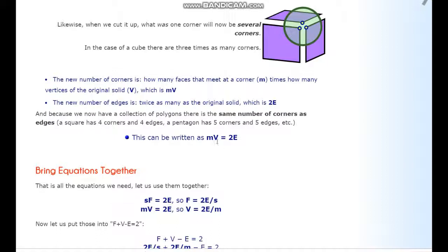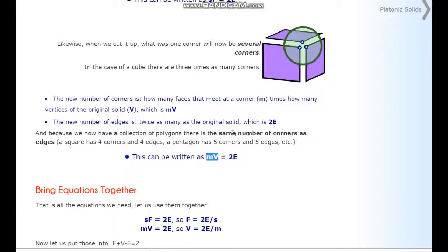With M as the degree of each vertex and V as the number of vertices, M times V gives the sum of all degrees. By the sum of degrees formula, this equals two times the number of edges. So our second result is: M times V equals two E. That's why we needed the sum of degrees formula.